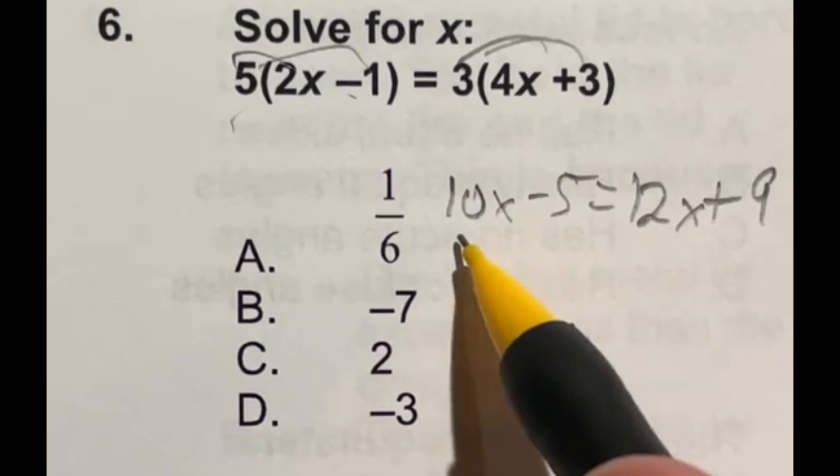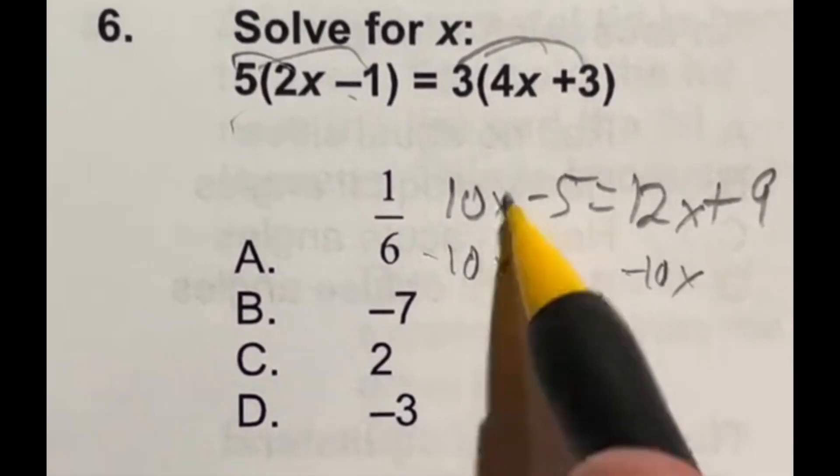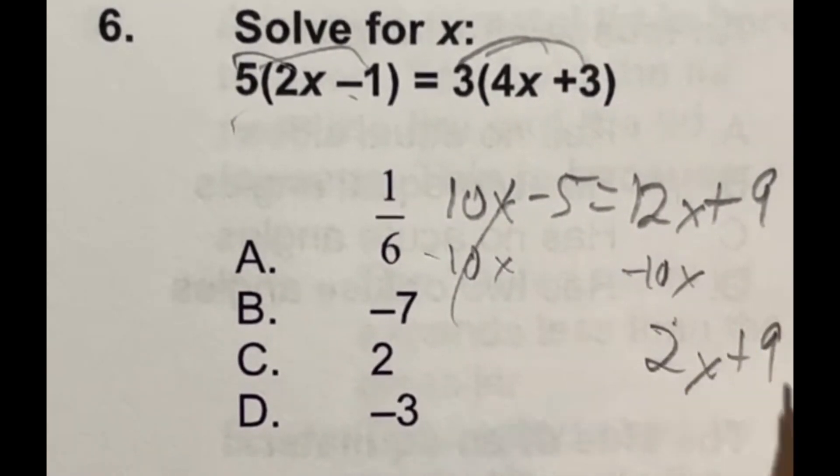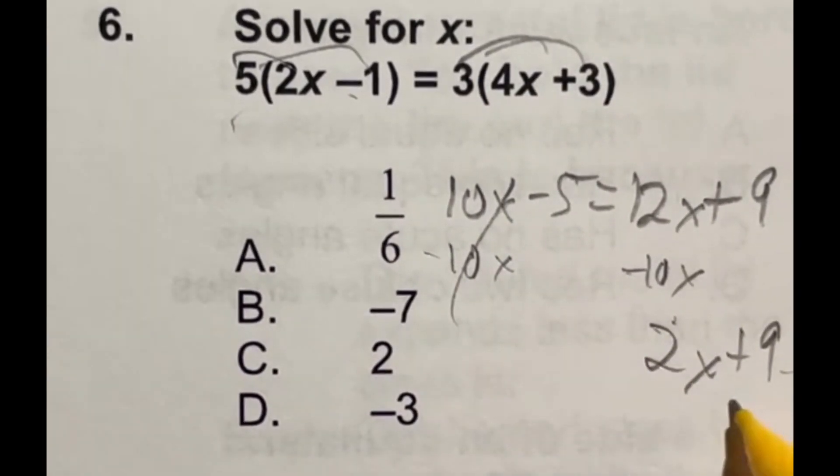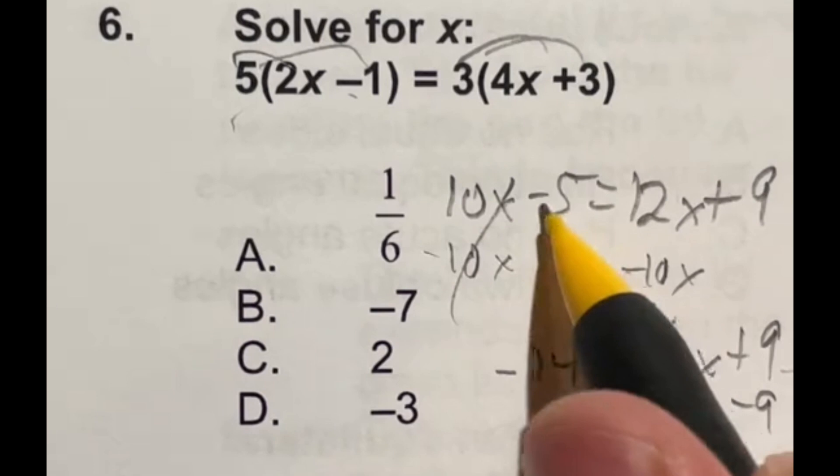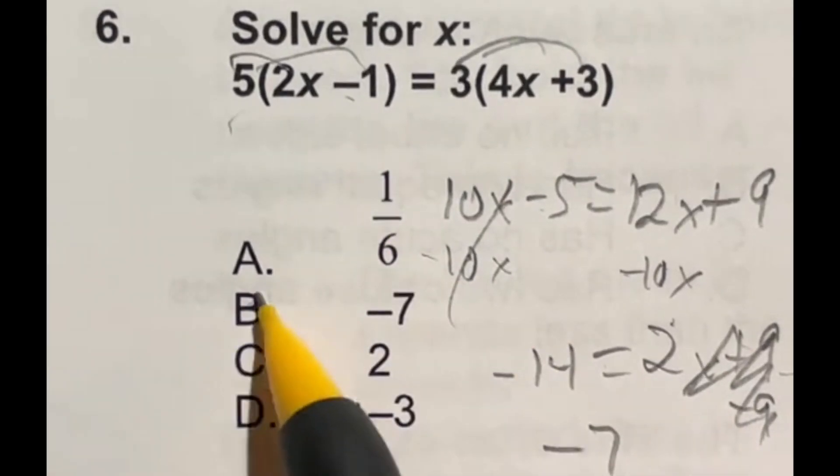Now I need to get the x's to the same side. So I'm going to subtract 10x from both sides. That's going to cancel out over here, leaving me with 2x over here, still plus that 9. And then we're going to subtract the 9 from both sides to give me negative 14 over here because negative 5 minus 9 is equal to my 2x. Now divide both sides by 2 to give me a final answer of negative 7, option B.